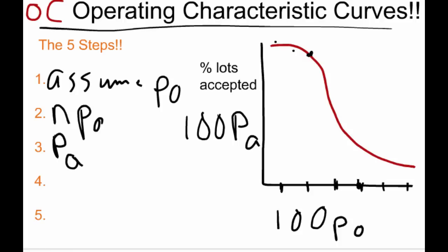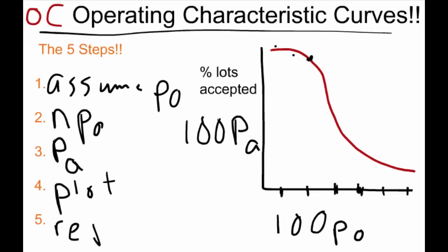Step number four is my favorite part because this is when we get to plot this data. And then step five is we're going to repeat steps one through three until we get the rest of these values. So we're going to assume this one, we're going to multiply it times N, then we're going to get each of the values for the Y-axis, then we're going to plot those as we do it. So we'll plot them one by one, and then we'll repeat them all together.